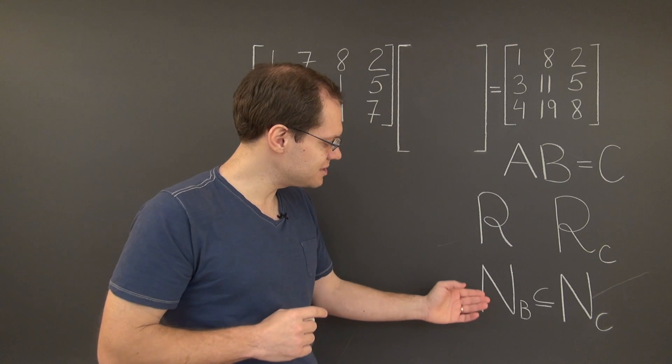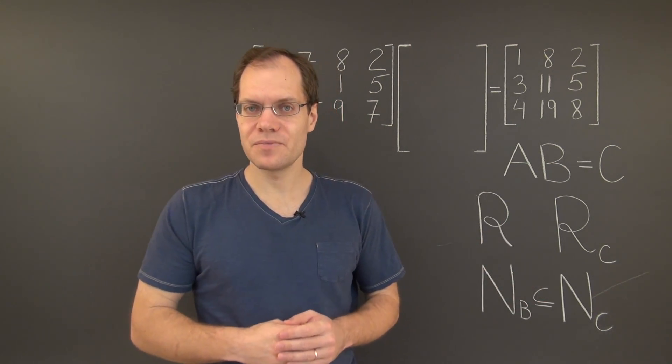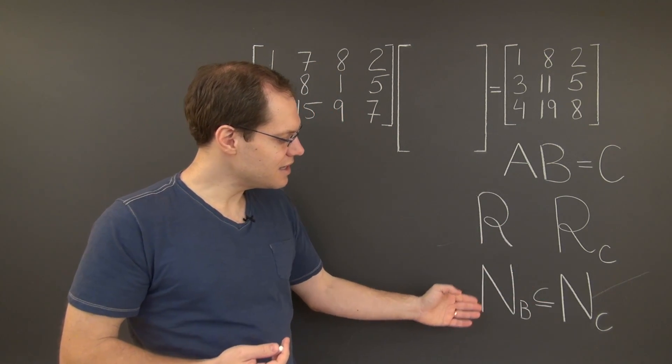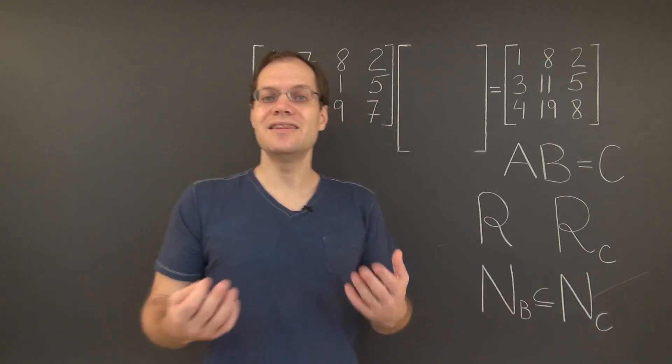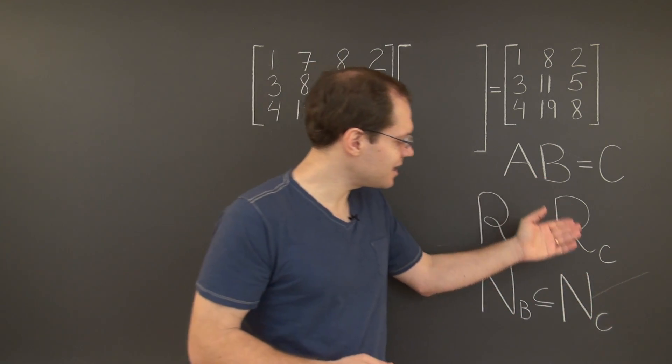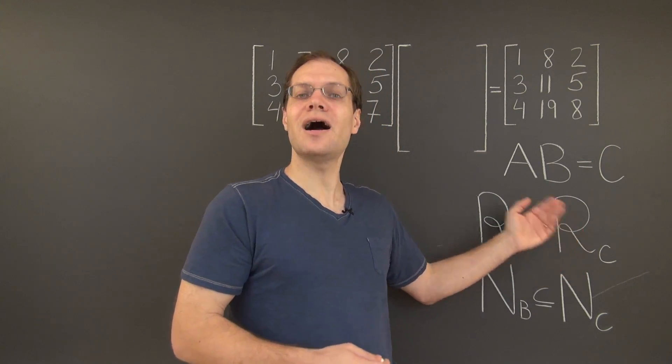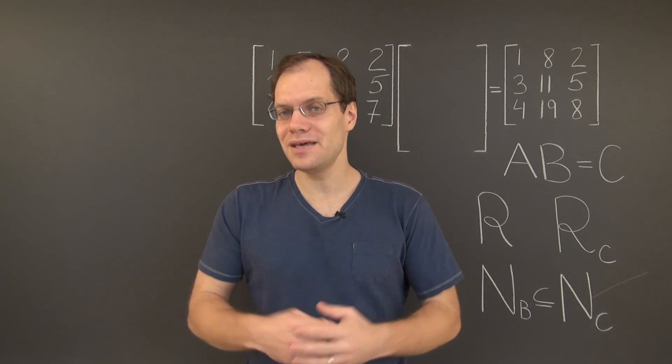More precisely, it's always the same or larger. In other words, the null space of B is a subspace of the null space of C. In this video, we'll try to relate the column space of C to either the column space of A or B.